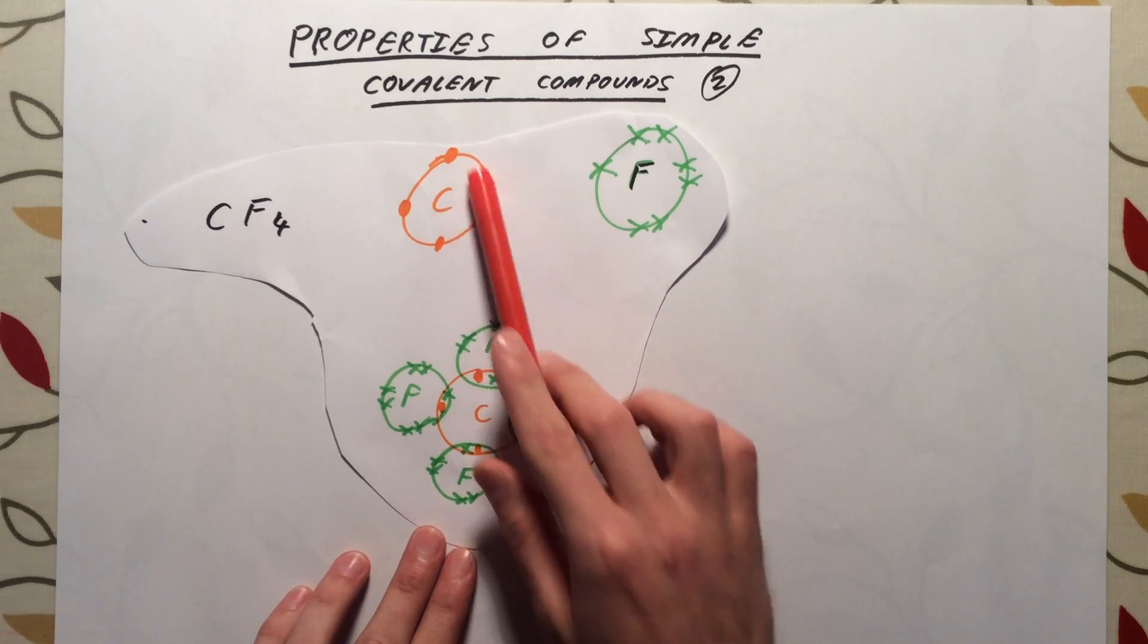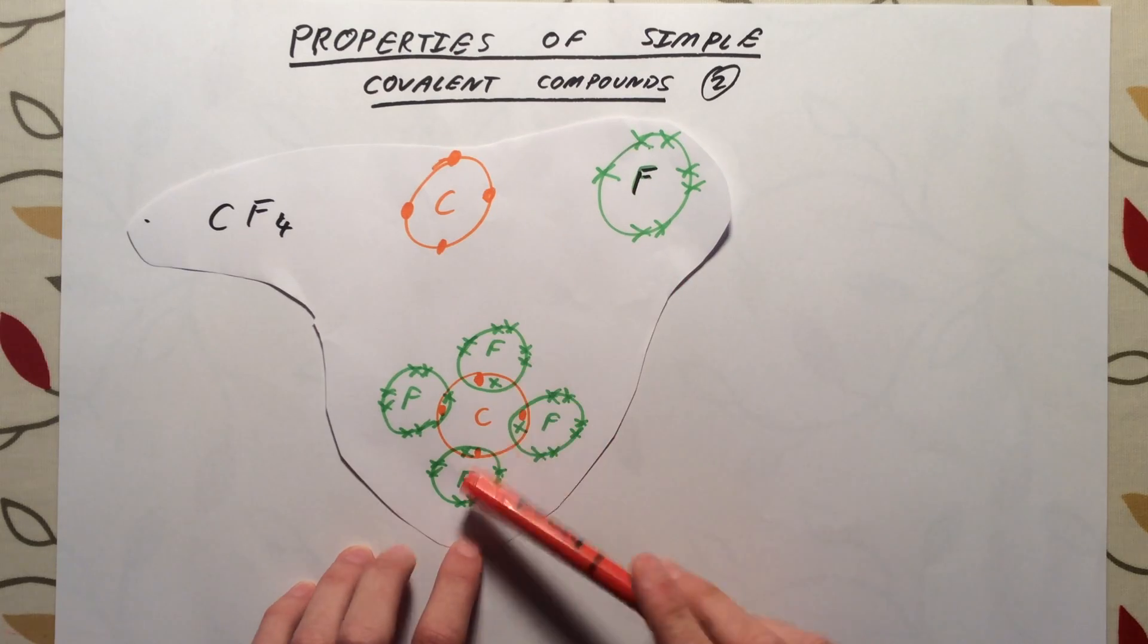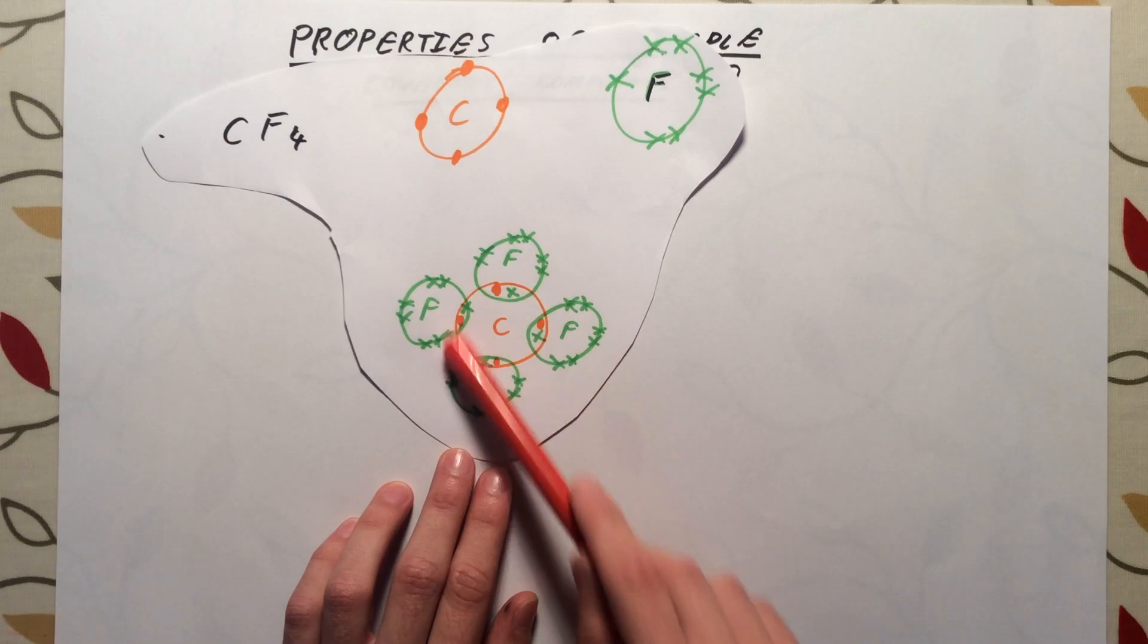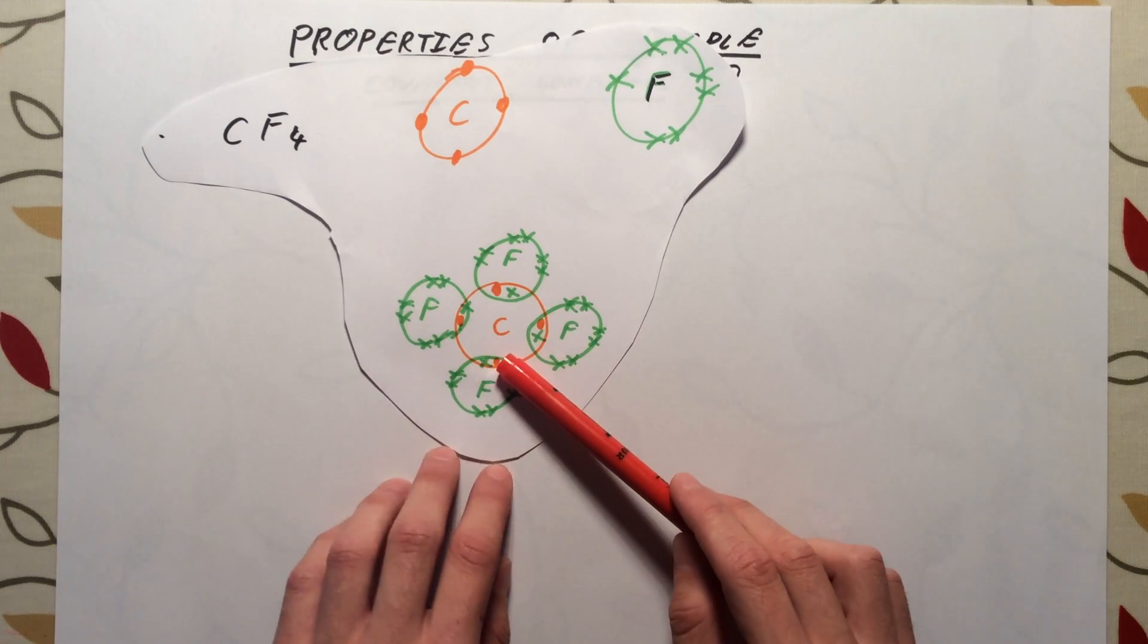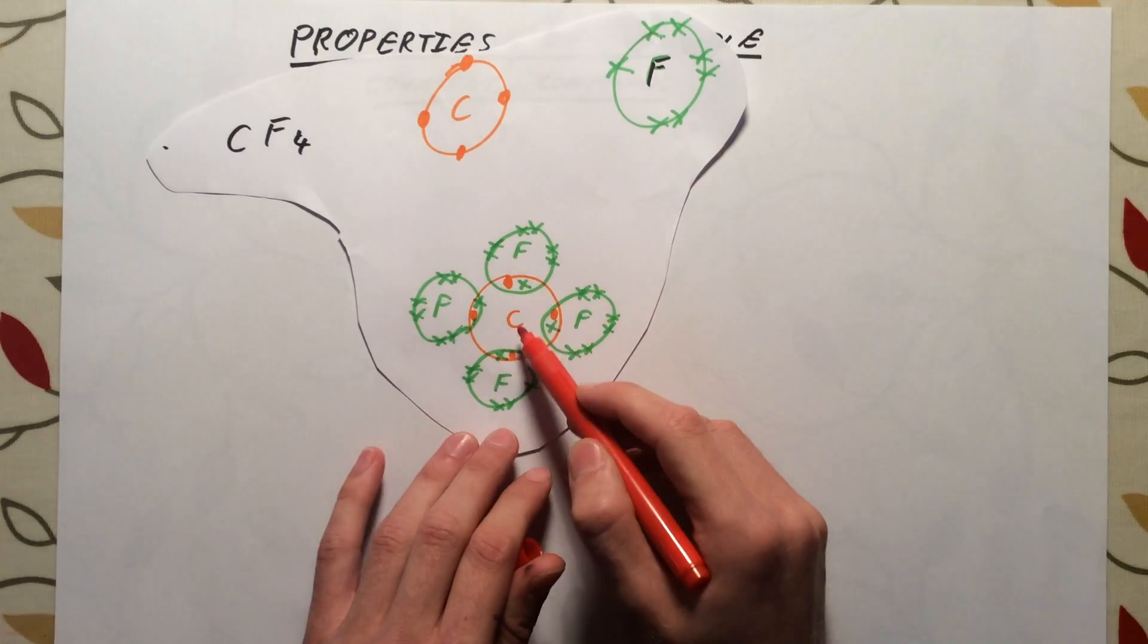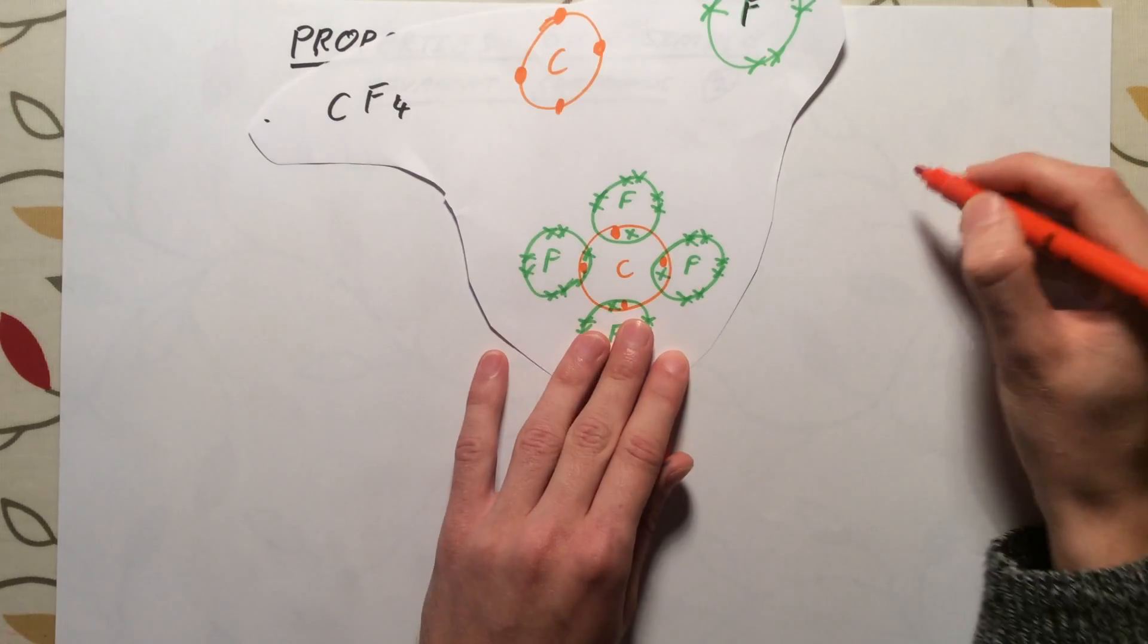We showed how we would draw the electron structure for the outer shell of an atom of carbon and then fluorine, and showed how electrons would be shared between the atoms to form a simple covalent compound. In this video, we are going to simplify our representation of this molecule CF4 and show it simply like this.